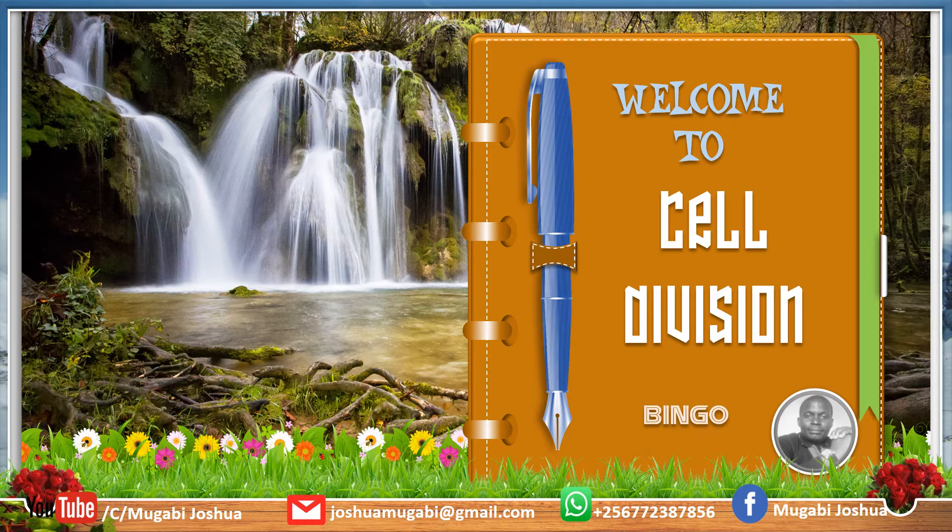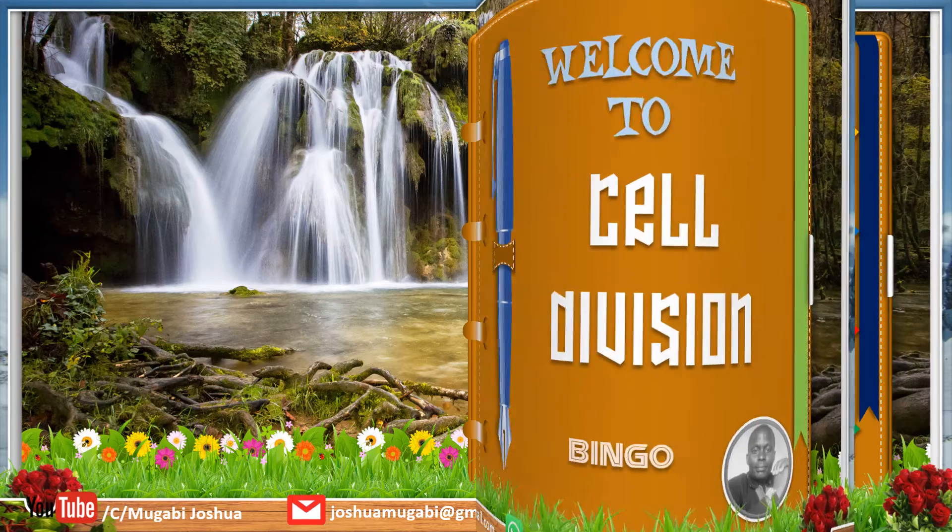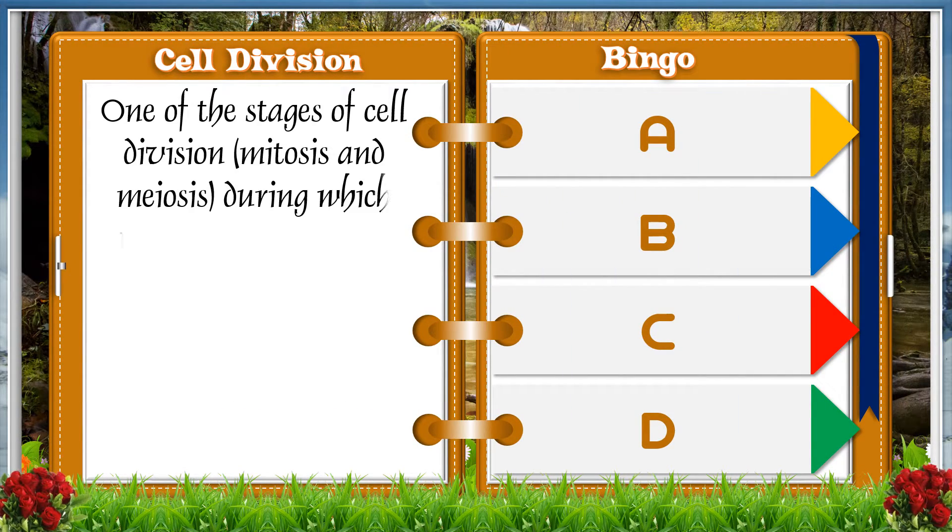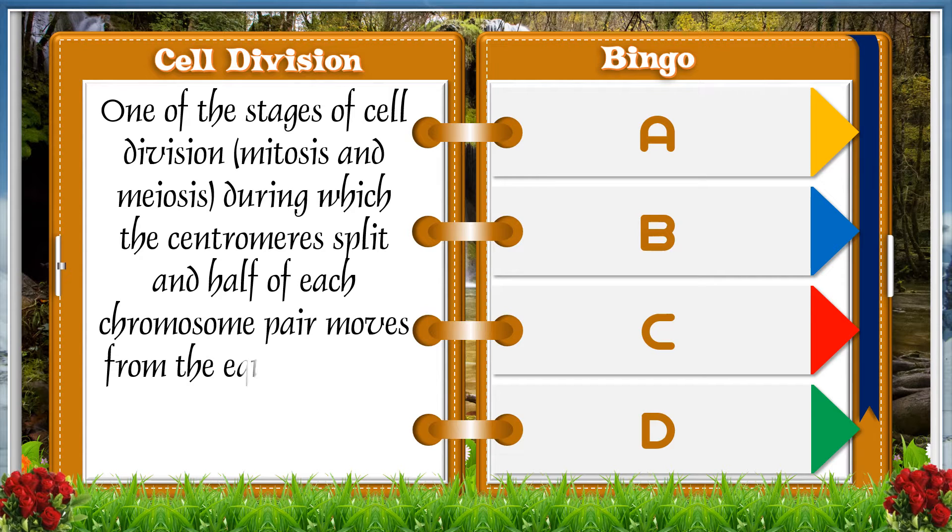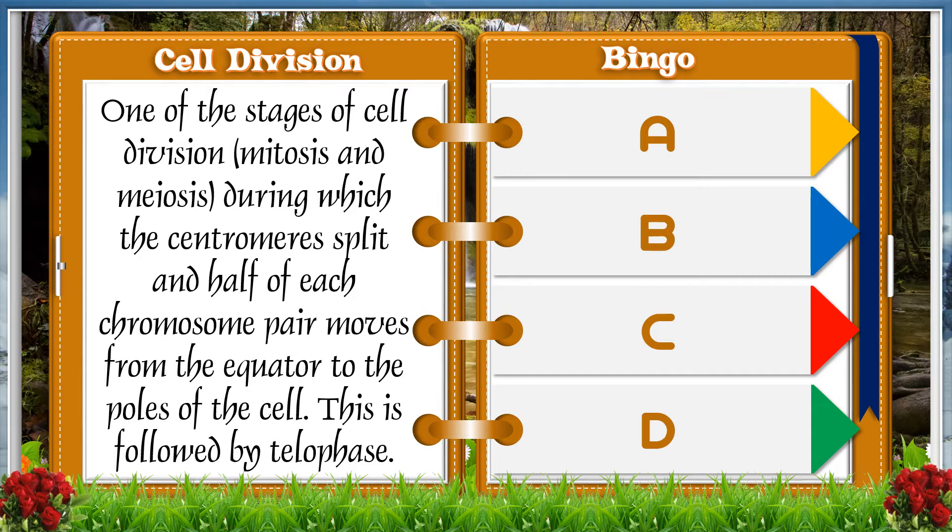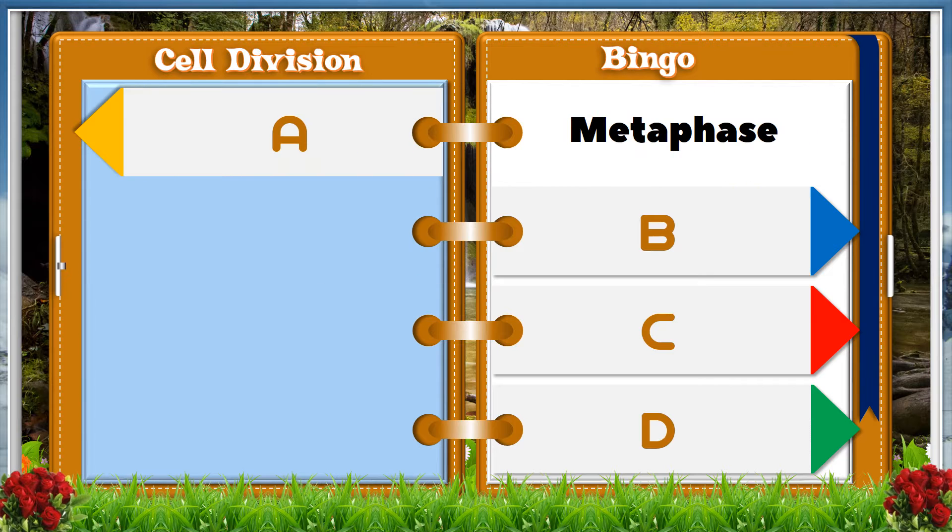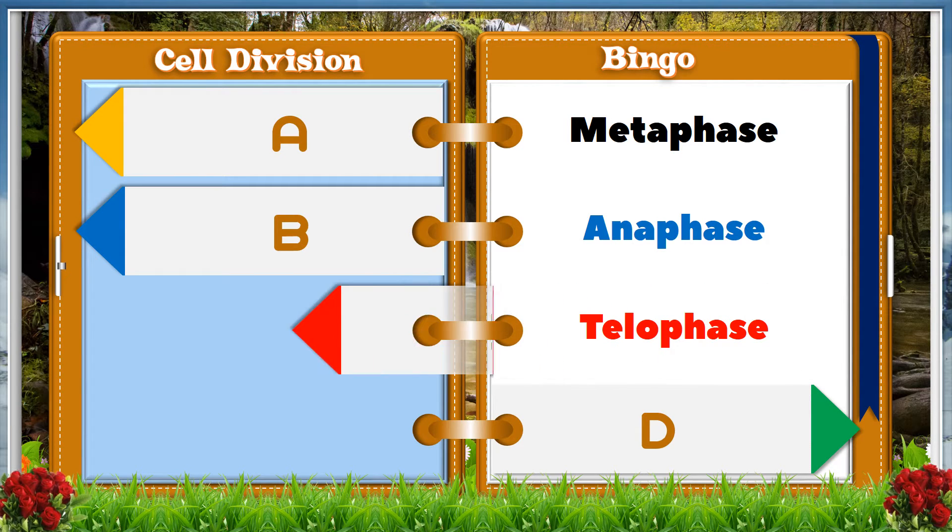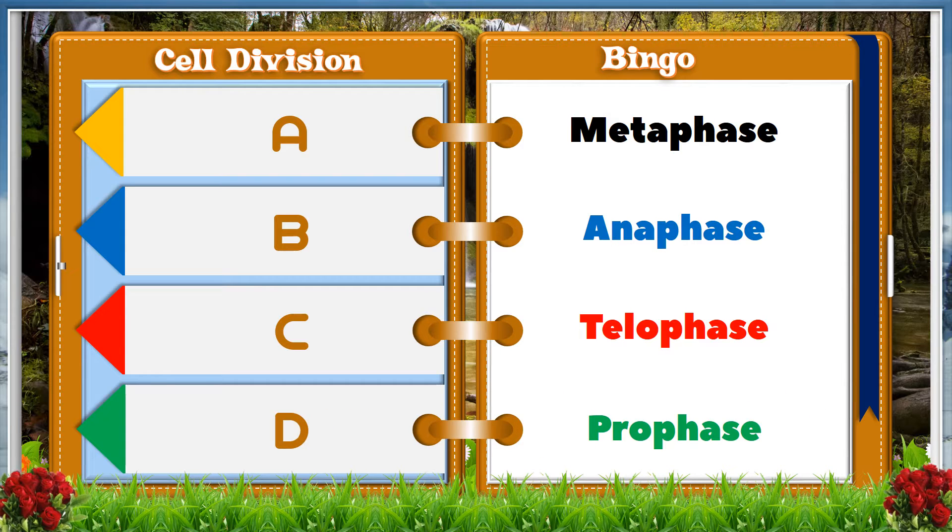One of the stages of cell division, it might be mitosis or meiosis, during which the centromeres split and half of each chromosome pair moves from the equator to the poles of the cell. This is followed by telophase. A metaphase, B anaphase, C telophase, D prophase.